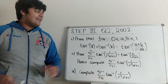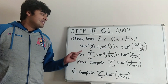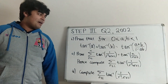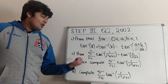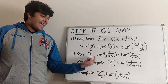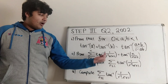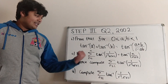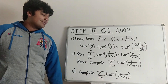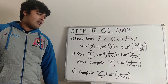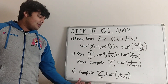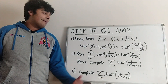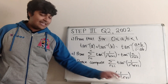The first part, we want to prove that for a and b between 0 and 1, this formula holds: inverse tangent of a plus inverse tangent of b equals inverse tangent of (a plus b) divided by (1 minus ab). Once we've done that, we move on to part 2, which is to prove that the sum from r equals 1 to n of inverse tangent of 1 over (r squared plus r plus 1) is equal to inverse tangent of n over (n plus 2). Then using that, we want to compute the infinite sum from r equals 1 to infinity of inverse tangent of 1 over (r squared plus r plus 1). Finally, the last part asks us to compute the infinite sum from r equals 1 to infinity of inverse tangent of 1 over (r squared minus r plus 1). So here we have plus r and here we have minus r.